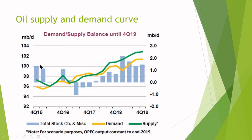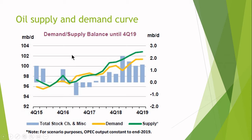The blue bars indicate the total stocks available to the world — they may show rise and fall. Whenever new resources are discovered, these graphs tend to rise. The yellow one is the demand curve and the green curve is the supply curve. In ideal scenarios, the supply curve should be a little higher than the demand curve. But whenever the supply curve is below and the demand curve is above, it means that demand exceeds supply and oil prices tend to go higher.